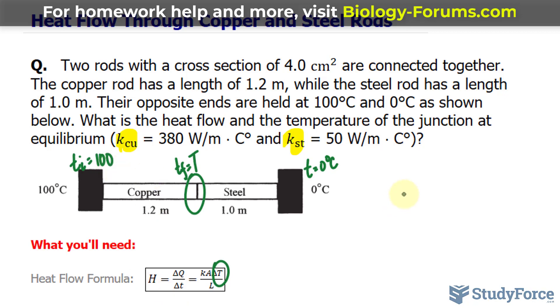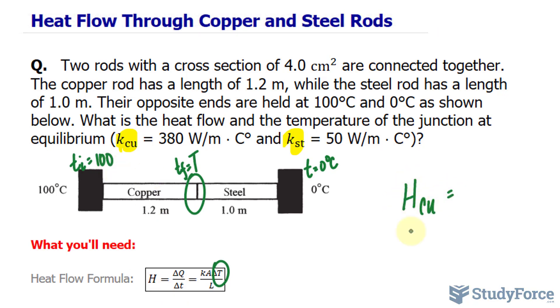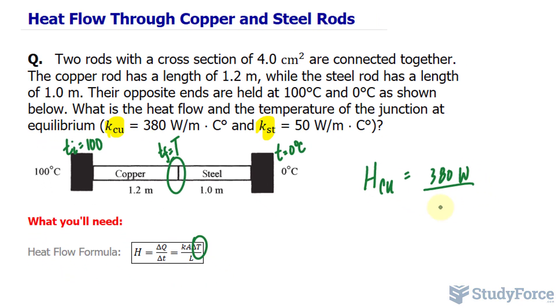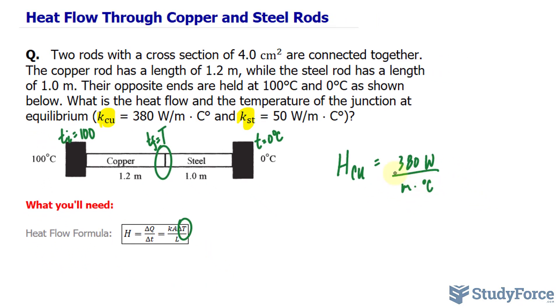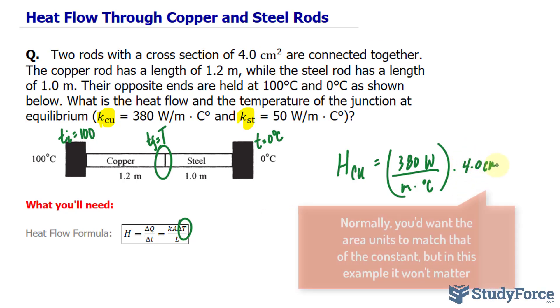Starting off with copper, H sub Cu, the heat flow for copper, is the value for K, that's the thermal conductivity being 380 watts per meter times degrees Celsius, multiplied by the area, or the cross-sectional area here, being 4.0 centimeters squared.